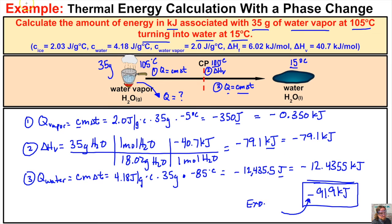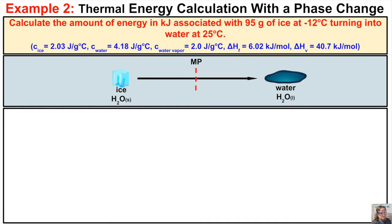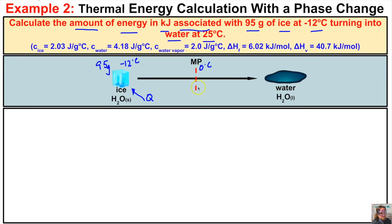Let's take a look at the second example. It says to calculate the amount of energy in kilojoules associated with 95 grams of ice at negative 12 degrees Celsius turning into water at 25 degrees Celsius. We start with 95 grams of ice at negative 12 degrees Celsius. The ice will absorb thermal energy, begin to melt at zero degrees Celsius, and then continue absorbing energy until it reaches 25 degrees Celsius. We'll use Q = cmΔT for step one.